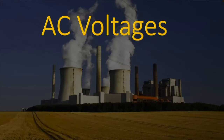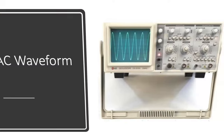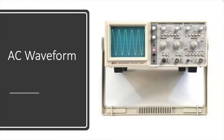So we're going to start with AC voltages. We're going to talk in more detail about this in a future video, but this is a picture of a coal-fired power plant that produces AC voltage. The large majority of our power plants produce AC voltages. Let's look at what AC voltage is. If you were to connect an oscilloscope to your wall outlet, this is what it would look like.